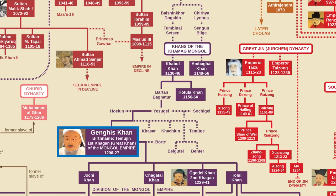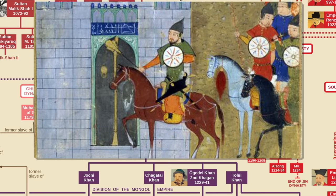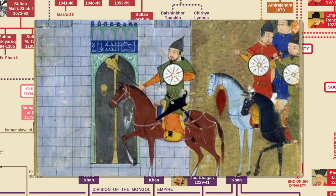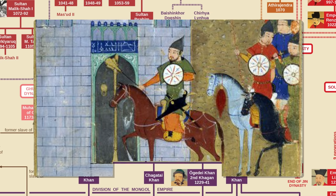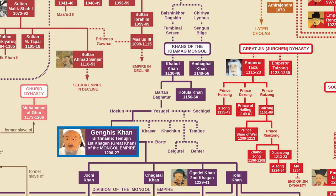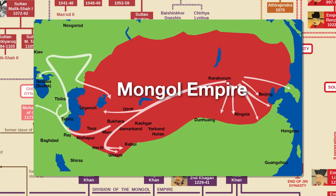He formed a new administration where merit and loyalty — not blood ties — determined rank. He commissioned the adaptation of a script for the Mongolian language to keep records, though this is not the traditional Mongol script used in Mongolia today. He also established a law code for the Mongols. More famously, he waged a series of wars against neighboring kingdoms, known collectively as the Mongol invasions, which eventually resulted in the Mongol Empire becoming the largest contiguous land-based empire ever. He himself defeated the Kara-Khitan in Central Asia, Khwarezmia in Persia, and the Western Xia and Jin in China.